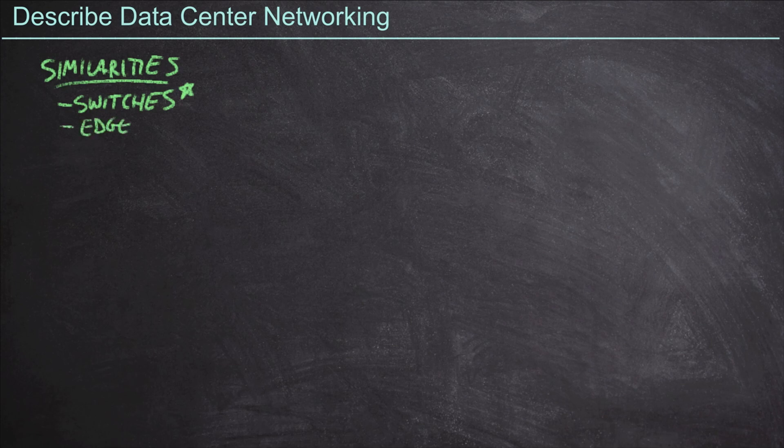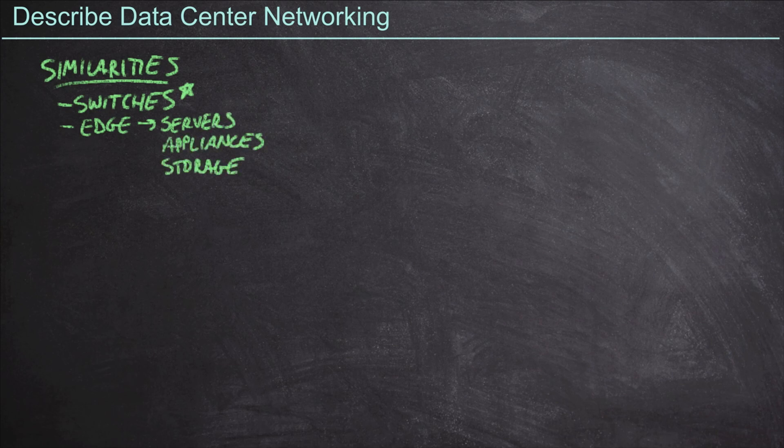Now, we are still going to be connecting to edge devices. At the edge, we're not really talking about phones and PCs and printers and wireless access points anymore. Instead, we are talking about servers and appliances and storage devices. But as part of this, we're going to use a lot of traditional constructs. We're still going to be using VLANs, for example, and IP networking. None of that changes. We're still building this on Ethernet and IP networks.